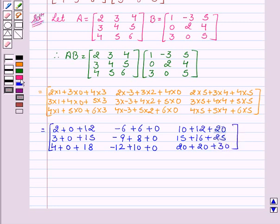So, this is equal to 14, 0, 42, 18, minus 1, 56, 22, minus 2, 70.